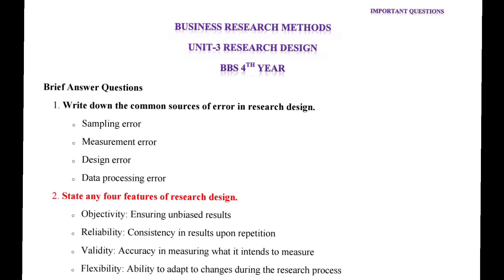Question 2: State any four features of research design. Objectivity — ensuring unbiased results. Reliability — consistency in results upon repetition. Validity — accuracy in measuring what it intends to measure. Flexibility — ability to adapt to changes during the research process.